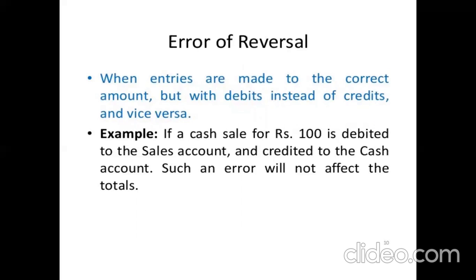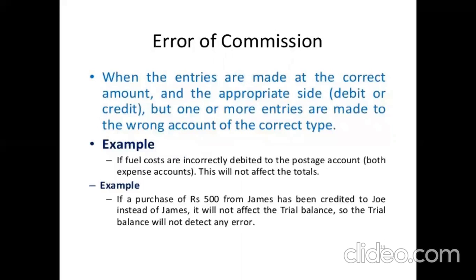Error of reversal occurs when entries are made to the correct amount but with debits instead of credits and vice versa. For example, if a cash sale of Rs. 100 is debited to the sales account and credited to the cash account, such an error will not affect the totals, but it is considered a significant mistake. Error of commission occurs when entries are made on the correct amount and appropriate side but one or more entries are made to the wrong account of the correct type — for example, if fuel costs are incorrectly debited to the postage account, or if a purchase from James is credited to Joe instead of James.